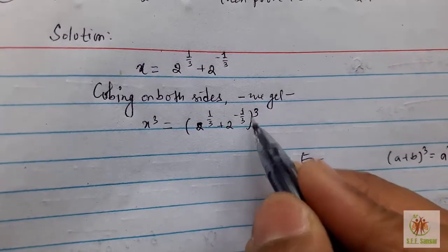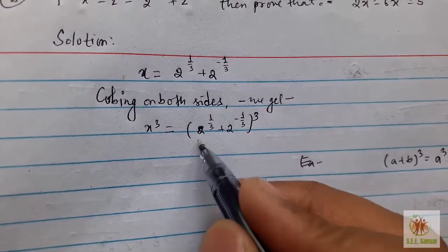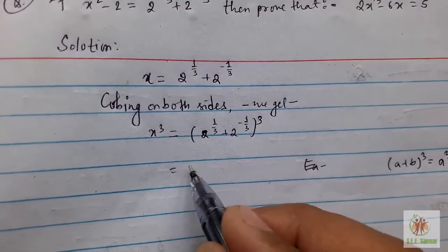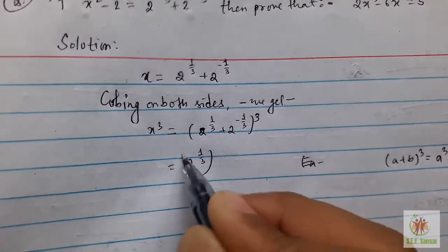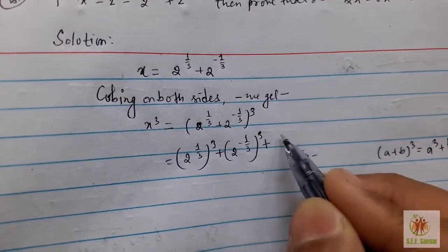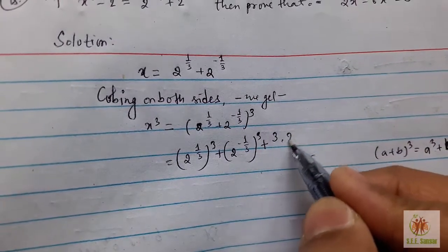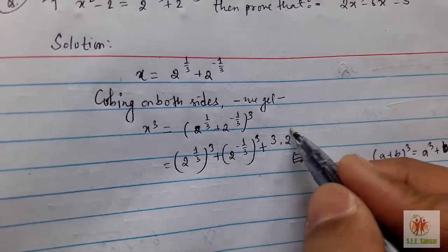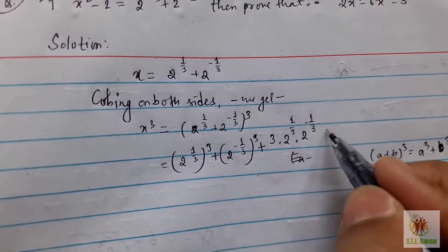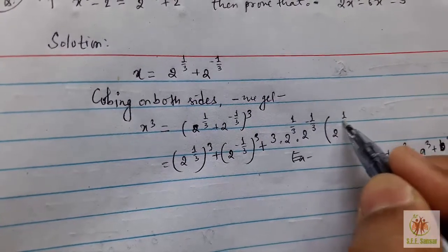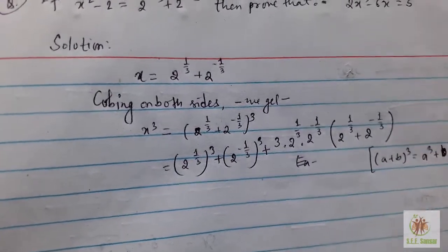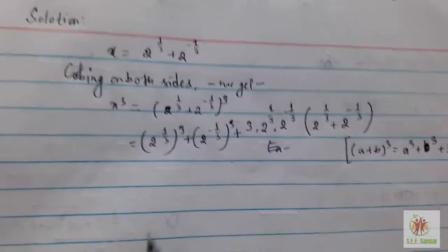Let a = 2^(1/3) and b = 2^(-1/3). Then a³ = [2^(1/3)]³, b³ = [2^(-1/3)]³, and 3ab(a + b) = 3 × 2^(1/3) × 2^(-1/3) × [2^(1/3) + 2^(-1/3)]. Note that (a + b) = x.